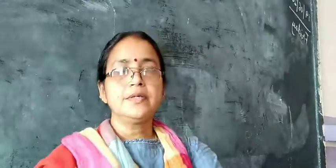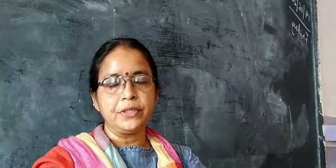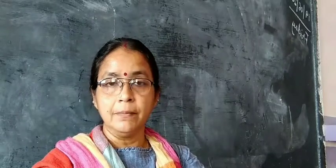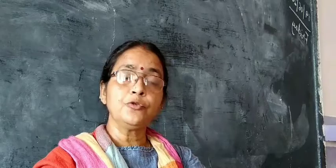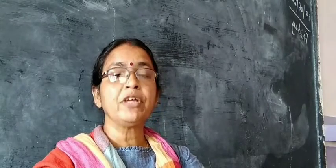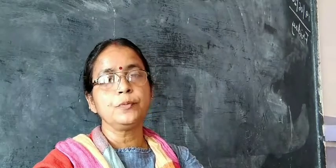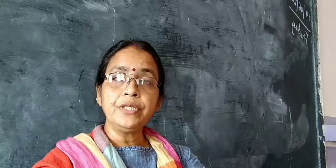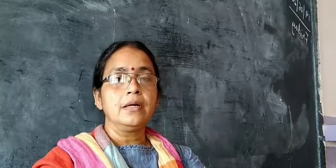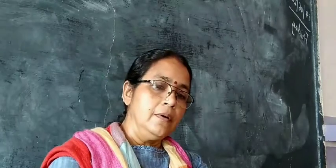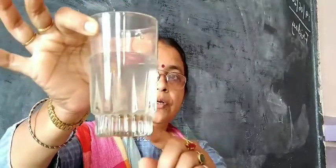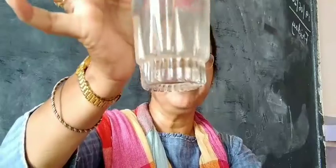So we saw transparent objects, translucent objects, and opaque objects. There are many objects through which light can pass completely — they are called transparent. Certain objects through which light rays can pass only partially — we can see through them partially — those are translucent. Objects through which light rays cannot pass at all are opaque. In the previous activity, I had put sand particles in water and you can see they are still lying at the bottom of the glass, showing that sand does not dissolve in water.